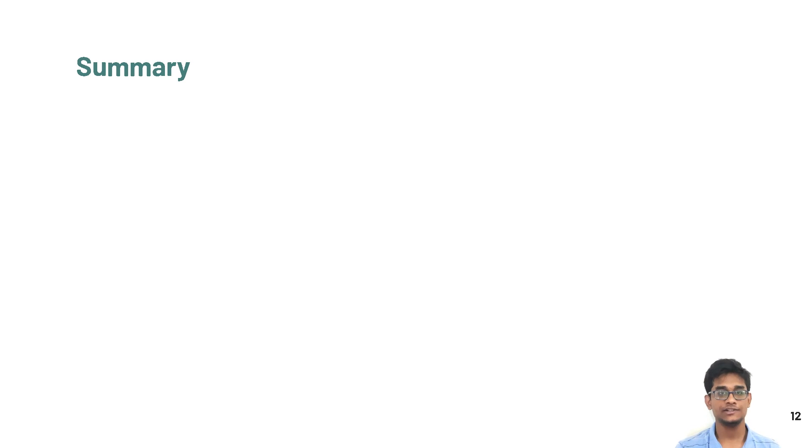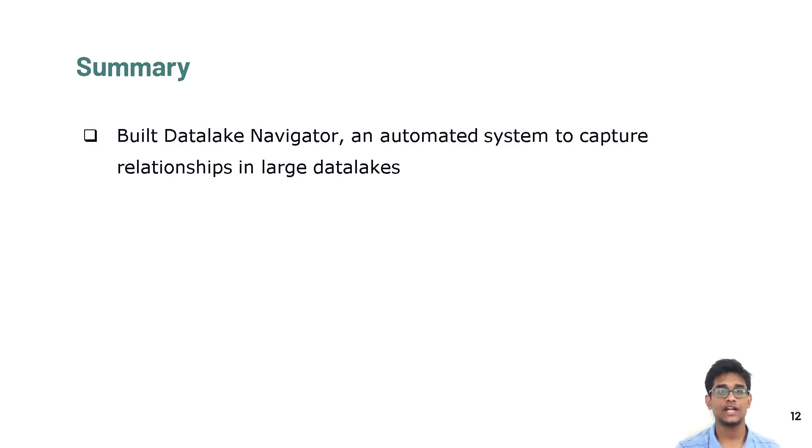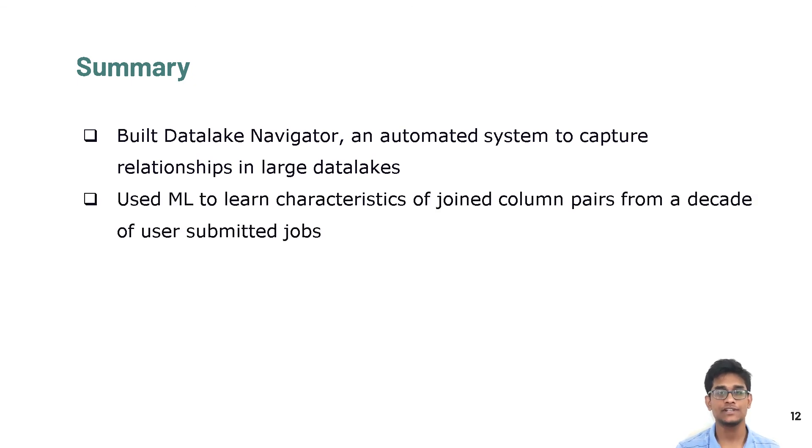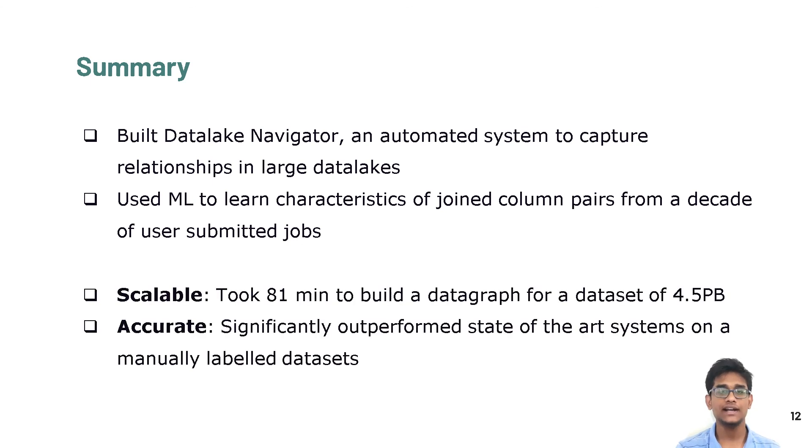To summarize, we built Data Lake Navigator, an automated system for data discovery in large data lakes. We used machine learning to learn the characteristics of columns joined in user jobs from the past decade. We built a data graph for a data lake containing 4.5 petabytes of data in 81 minutes. Thus, our approach scales well. We significantly outperformed other state-of-the-art systems on a manually labeled dataset by leveraging our past user queries. Thank you.